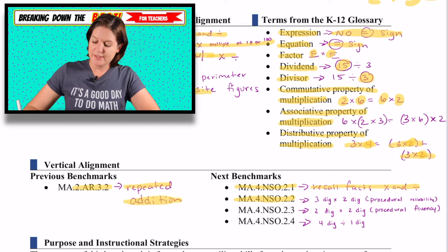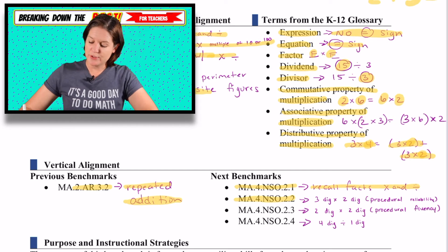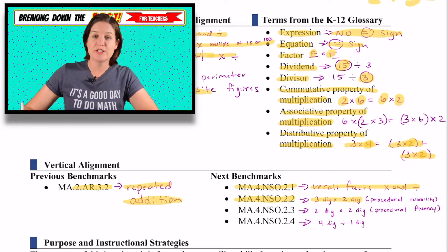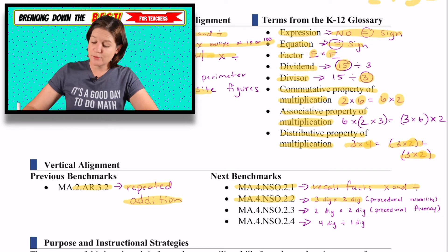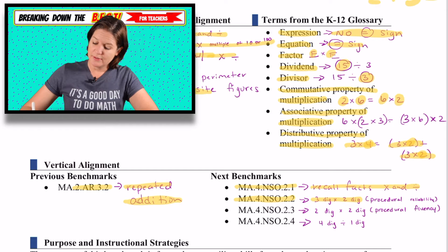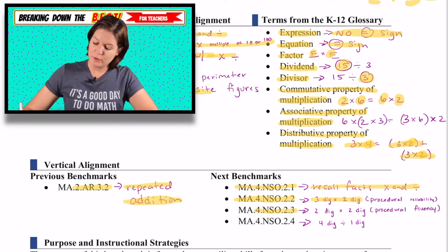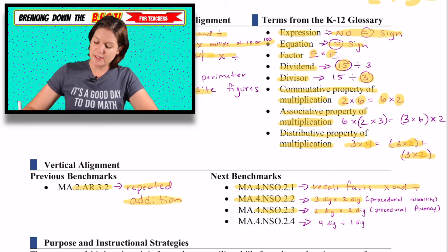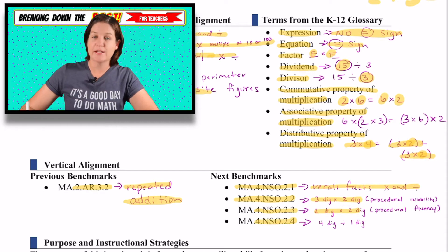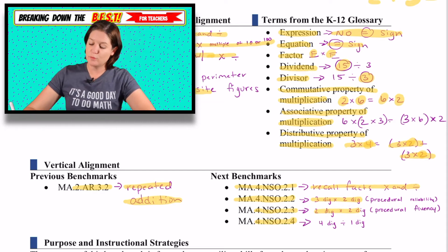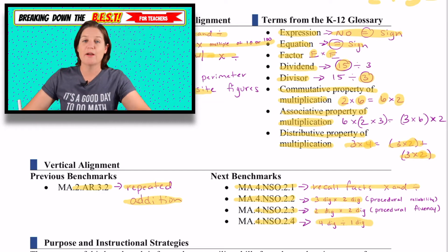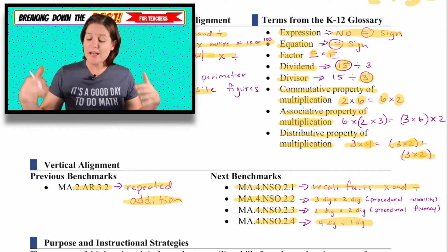4.NSO.2.2 is multiplying three digits times two digits. 4.NSO.2.3 is two digits times two digits, and 4.NSO.2.4 is four digits divided by one digit.